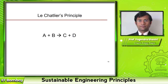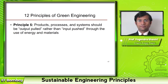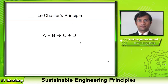The fifth principle of green engineering is related to this concept. It states that products, processes, and systems should be output pulled rather than input pushed through the use of energy and materials. Going back to the example, if you keep adding more A and B, that is an input pushed system. Output pulled is when you continuously reduce C and D so the equilibrium is pulled towards the output side. It is better to have an output pulled system rather than an input pushed system.